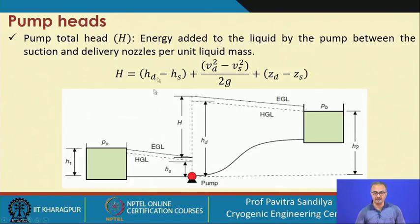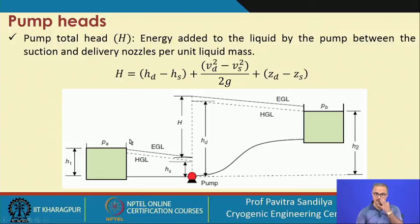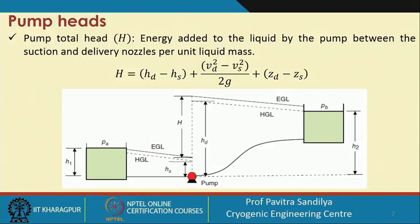The total head means the energy added to the liquid by the pump between the suction and the delivery nozzles per unit liquid mass — how much energy needs to be added to make the liquid flow from one pressure level to another. We can identify the potential head difference, the kinetic head difference, and the elevation head difference. Note that frictional head is neglected here as it is assumed to be similar on both sides.